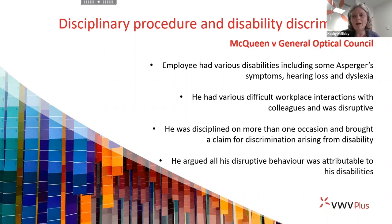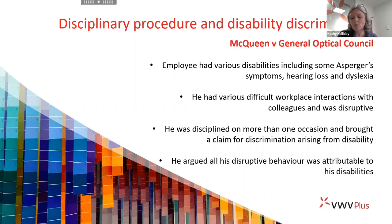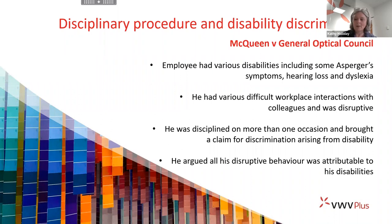Mr. McQueen appealed to the Employment Appeal Tribunal. The EAT upheld the tribunal's decision. They concluded that what Mr. McQueen called a need to stand up in order to talk was actually a matter of habit, and in respect of the way he would respond to colleagues when given certain instructions, they concluded he actually just had a short temper and that his disabilities had no effect on his conduct during the incidents in question. Therefore the General Optical Council had not treated him unfavourably because of something arising in consequence of his disability.